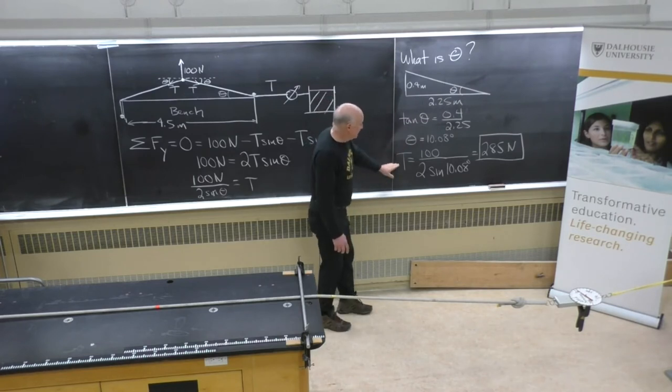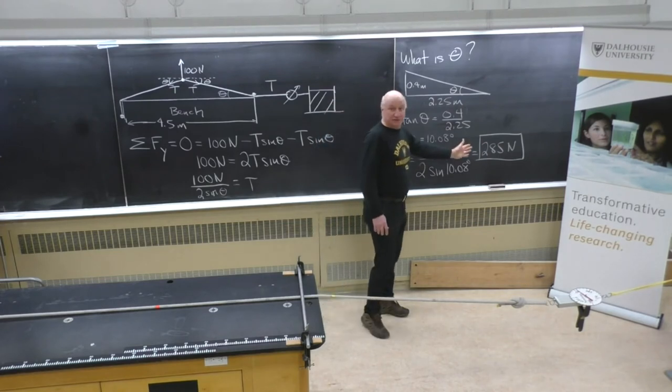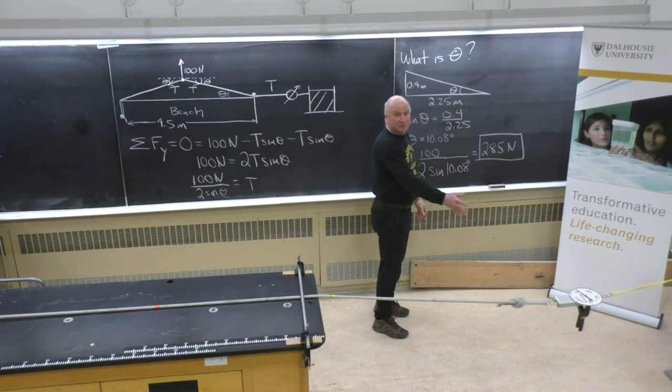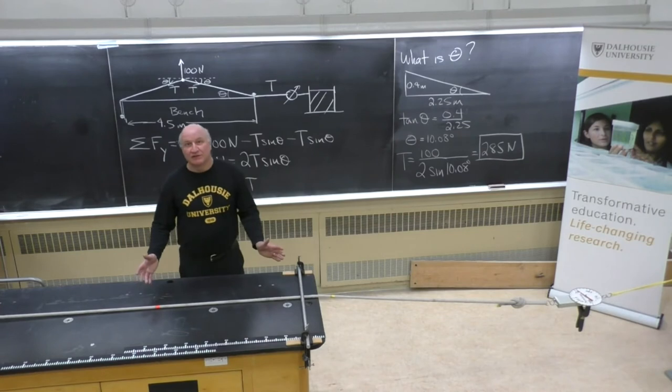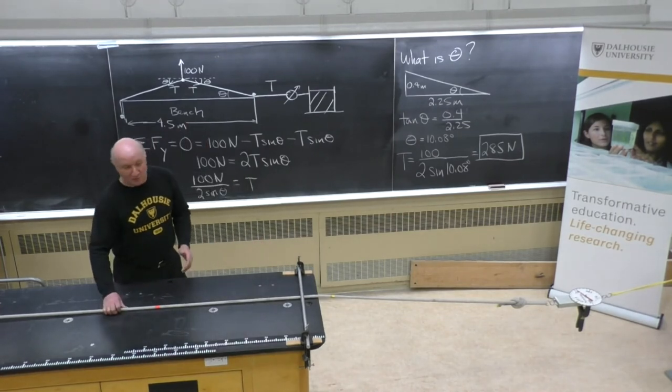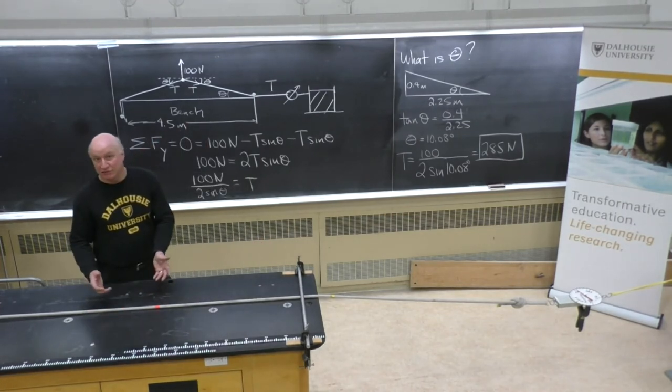And solving for T, we get 285 newtons, which is very close to what we saw when the cart moved. So that's how you can establish a much greater tension in the rope than actually applying the tension directly.